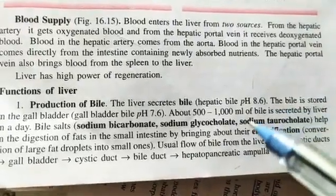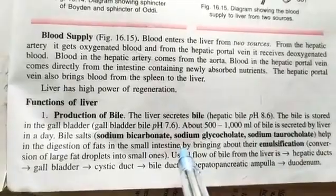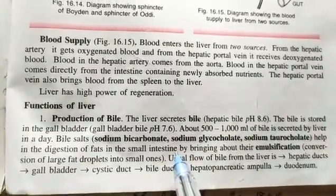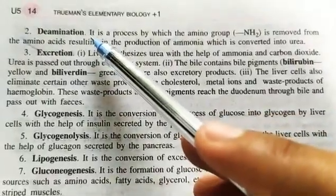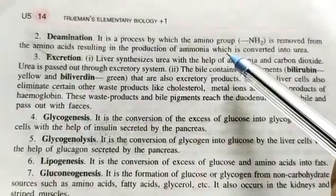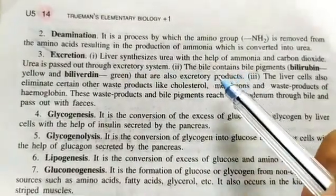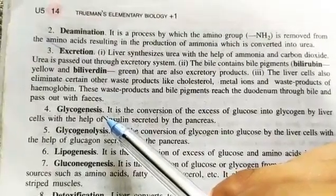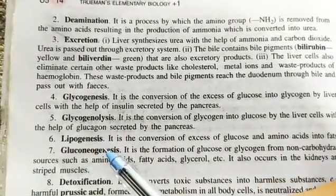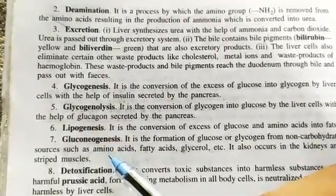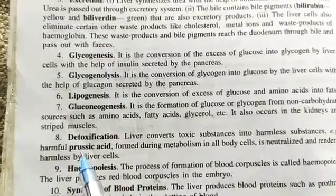Now let us discuss the functions of the liver. First is production of bile, which maintains the pH of the acidic HCl secreted by the stomach. Second is deamination — the removal of the NH2 group from amino acids. The liver also synthesizes urea with the help of ammonia. Other functions include glycogenesis — formation of glycogen; glycogenolysis — conversion of glycogen into glucose; lipogenesis — formation of lipids; gluconeogenesis — formation of amino acids from glucose; and detoxification, where it converts toxic substances into non-toxic substances.